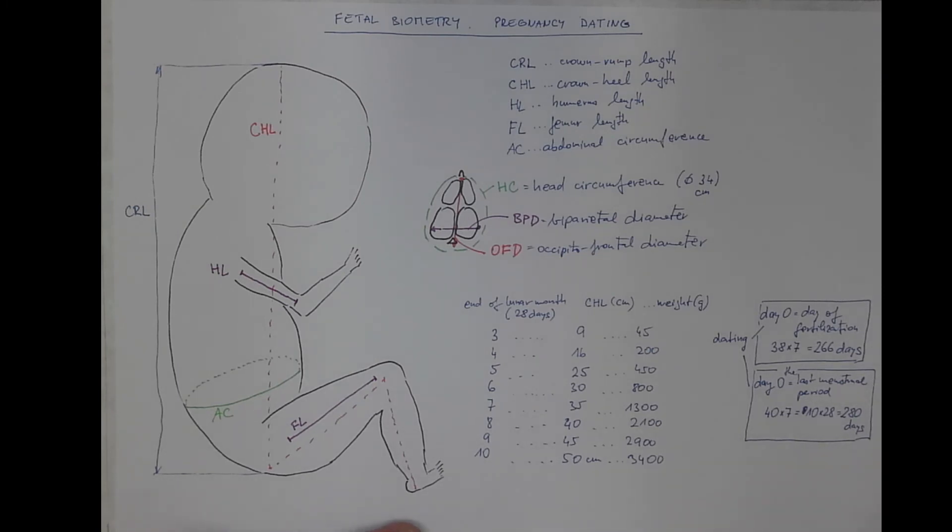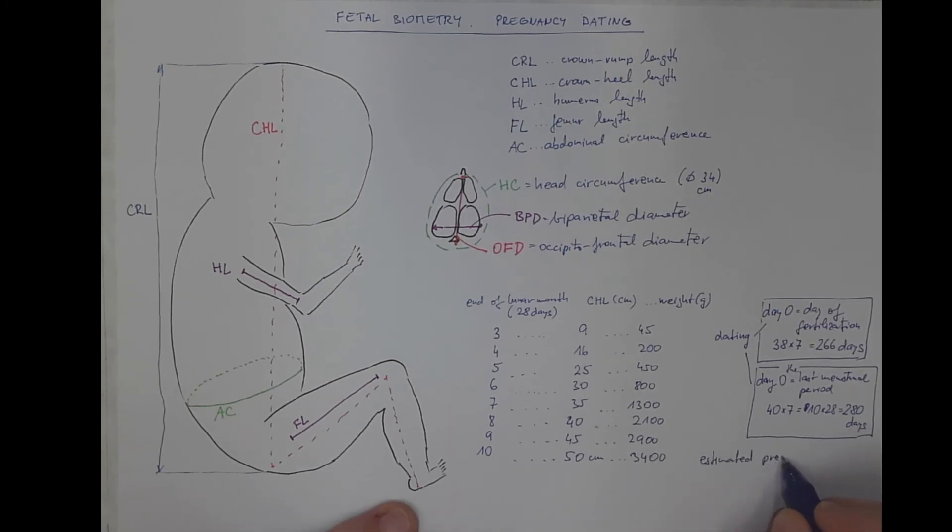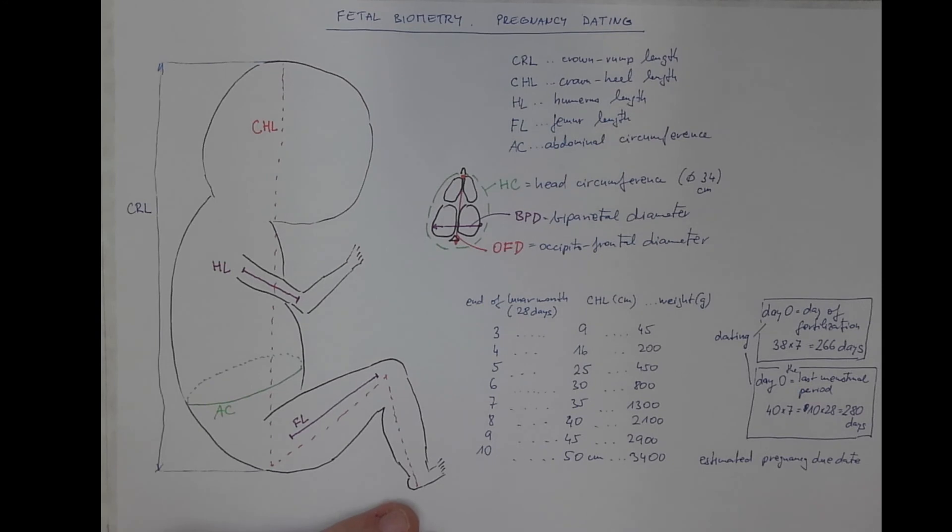There are various systems of how the pregnancy due date could be estimated. One of the classical methods was the date of the last menstrual period. You would add seven days and subtract three months and you got the date.